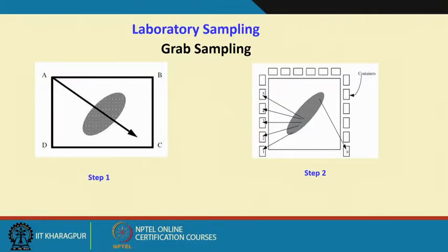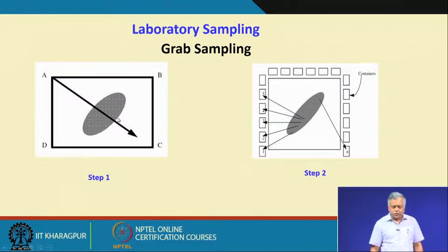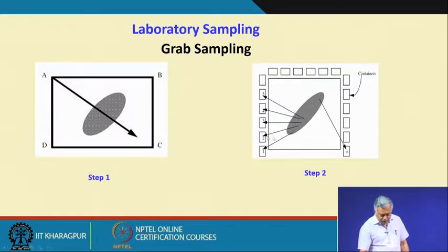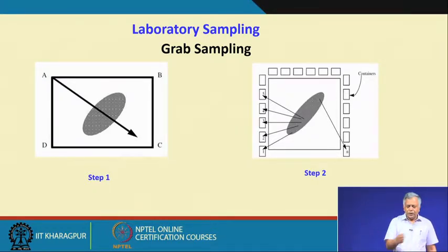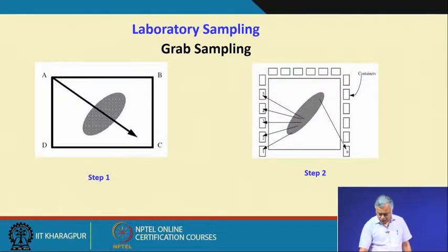In the laboratory, suppose you are given 20 kilograms of sample and have to do assay analysis, but for assay analysis you need only 1 gram. So again you have to do sampling from 20 kg down to 1 gram. One technique is called grab sampling — you flatten the 20 kg of material, take samples from different locations, mix them up, flatten again, and take samples with a spoon from different locations. You repeat this until you arrive at 1 gram. That is called grab sampling.